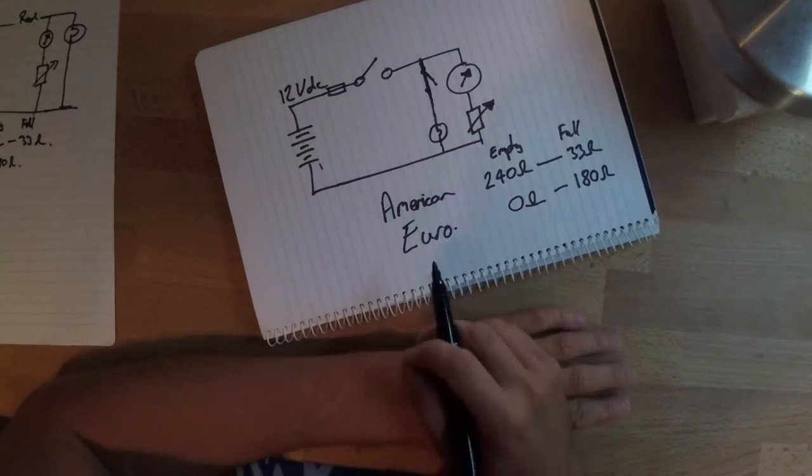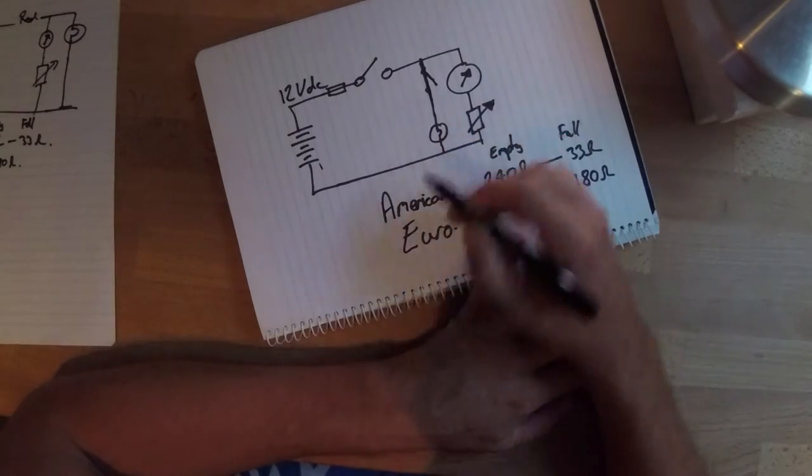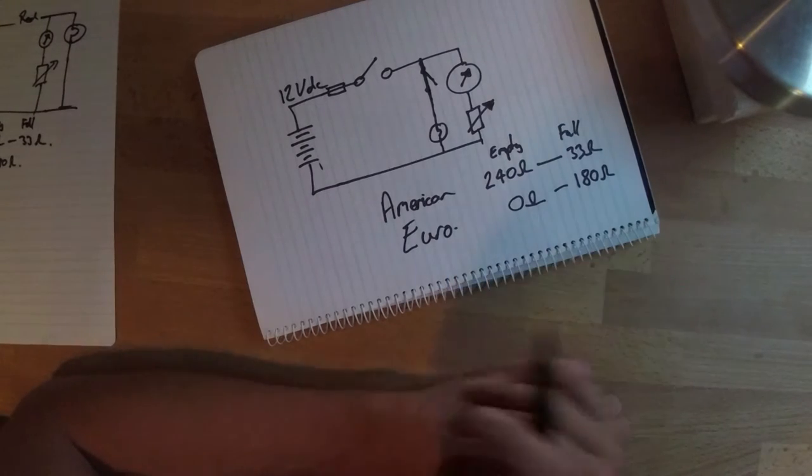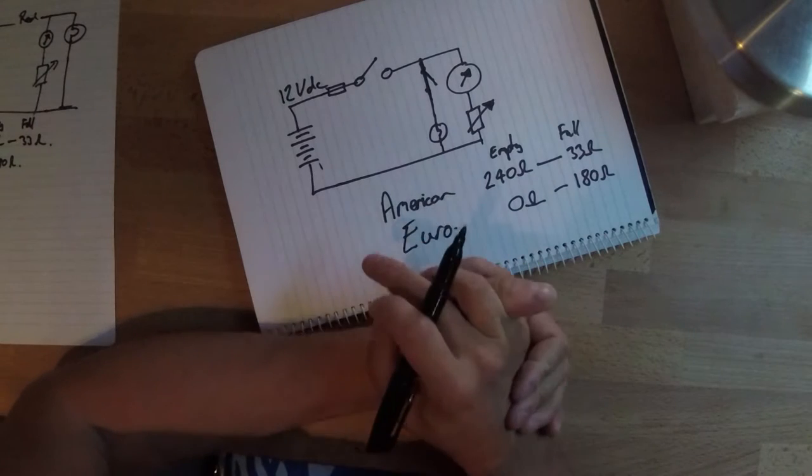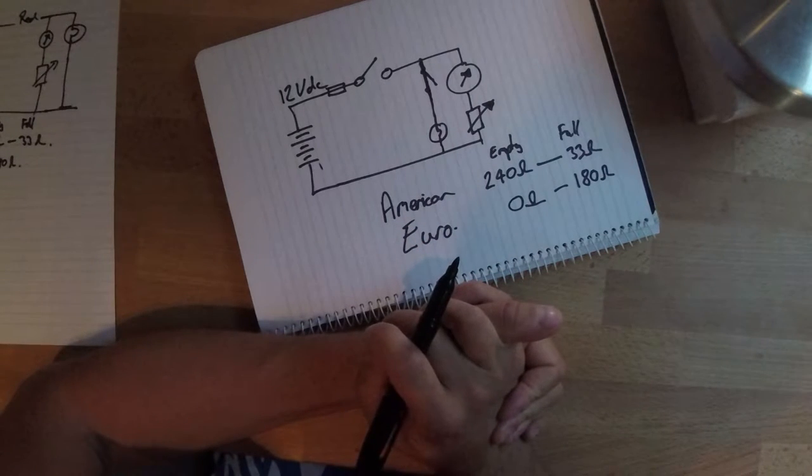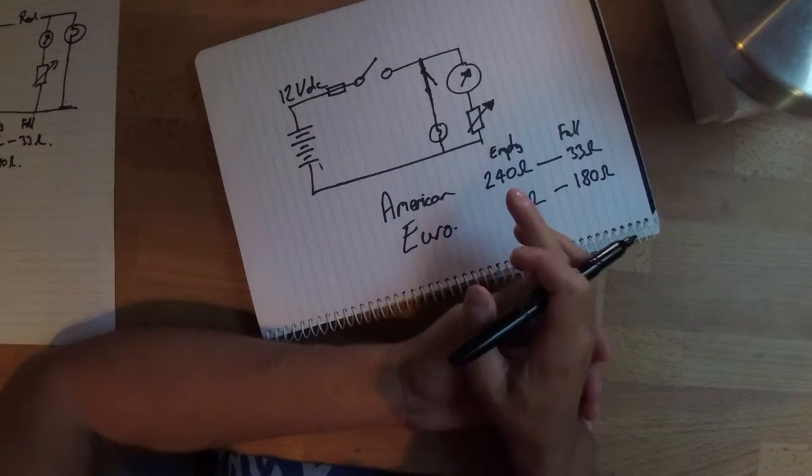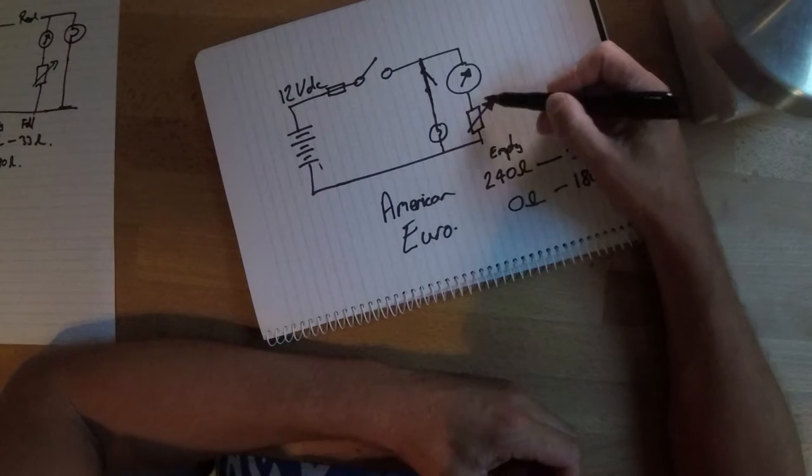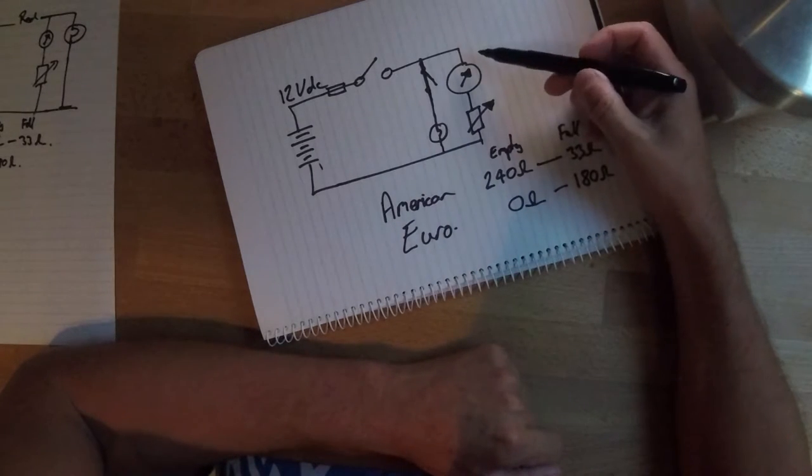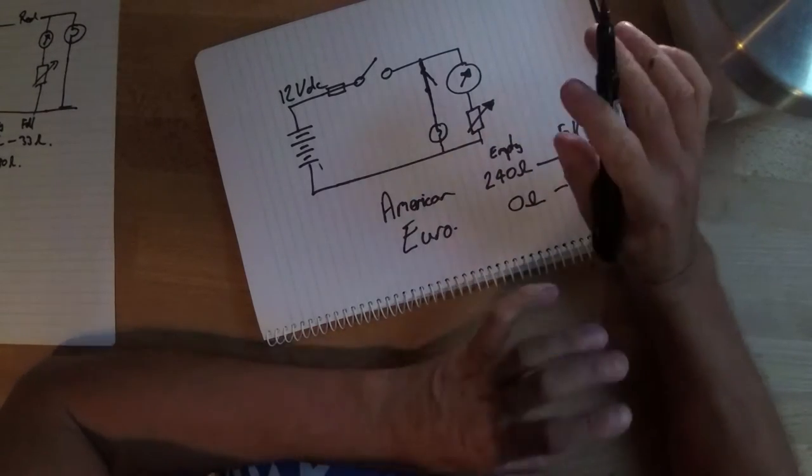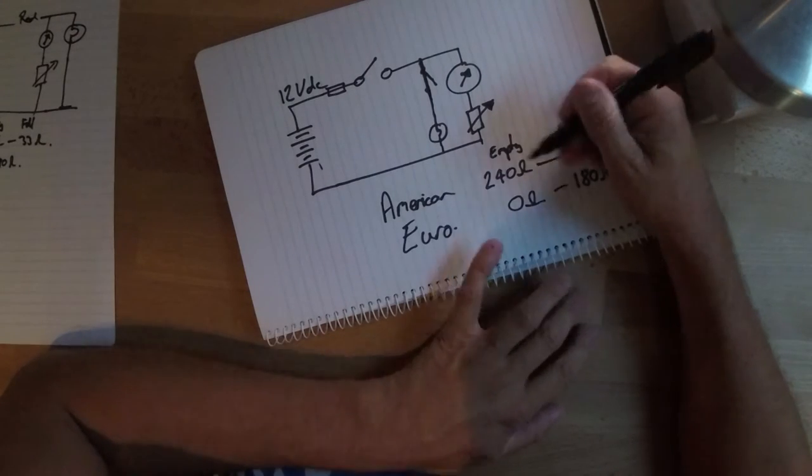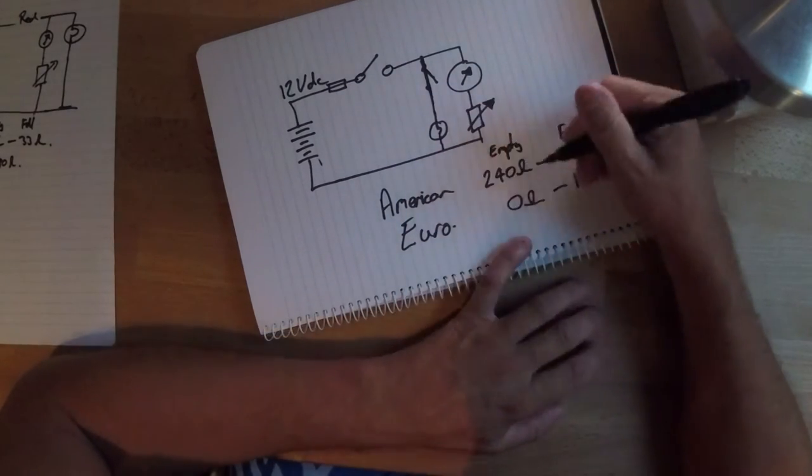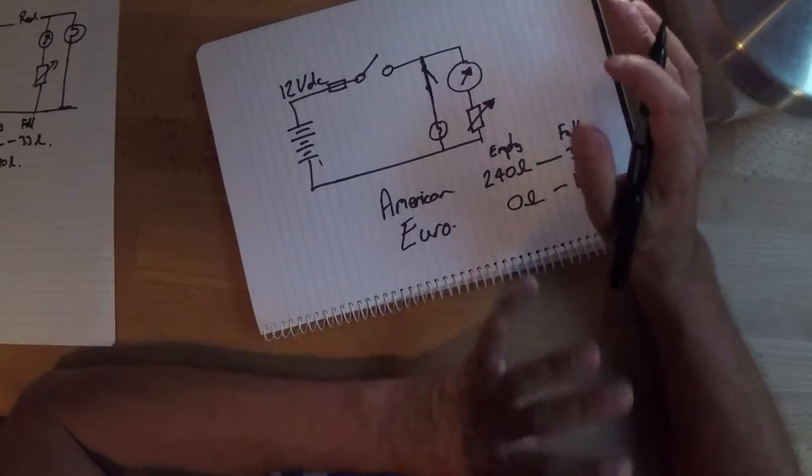So when we go to my boat, we're going to measure the resistance of the sender unit and have a look to see whether it's an American version or a European version so that we'll understand that. So that's the basics of an electric fuel gauge system. Components being the gauge and the sender unit. Remembering that there are two standards, the American and European standard, and that the gauges and the sender unit have to be from the same standard. You cannot mix and match a gauge from the American standard with a European sender unit or vice versa because they won't work.